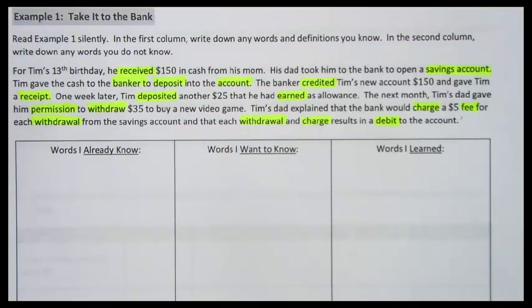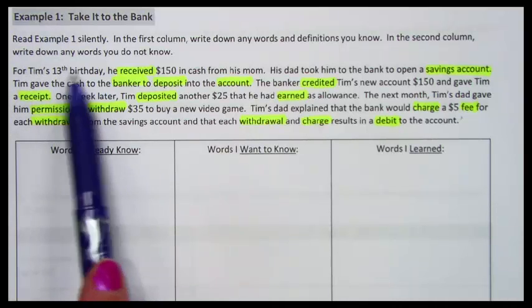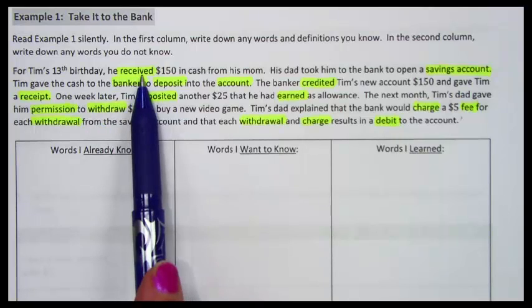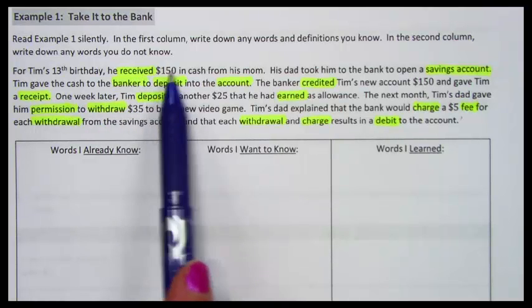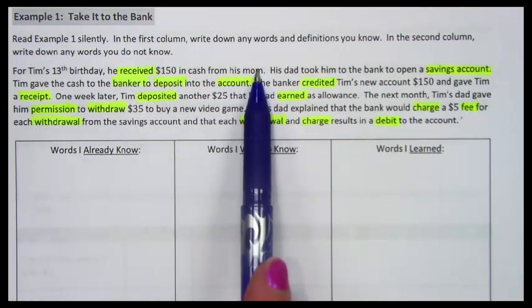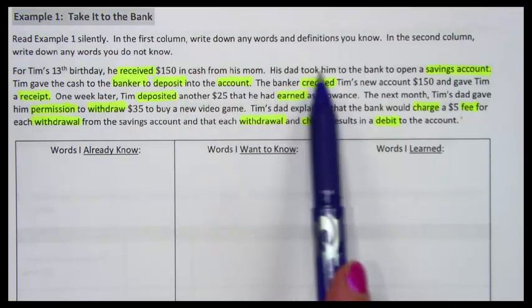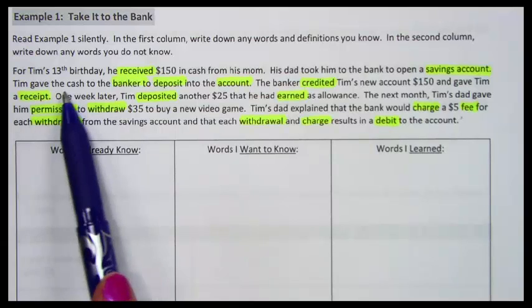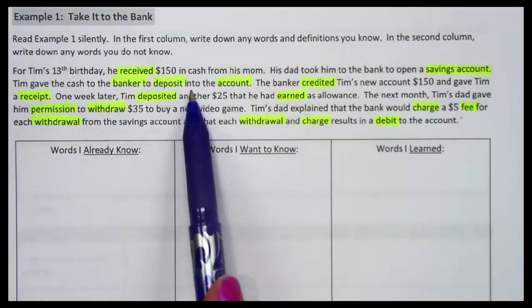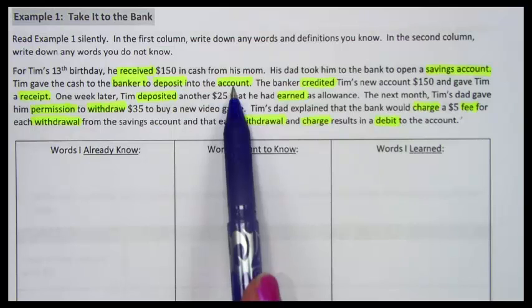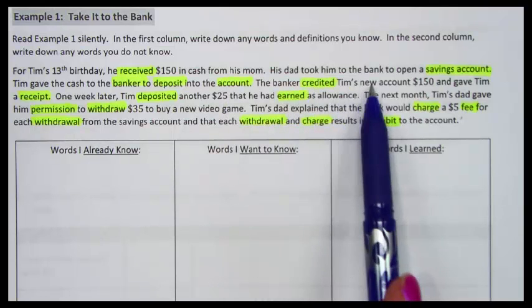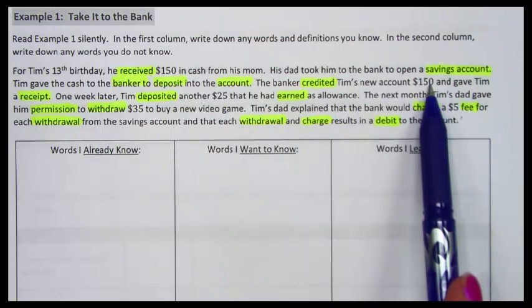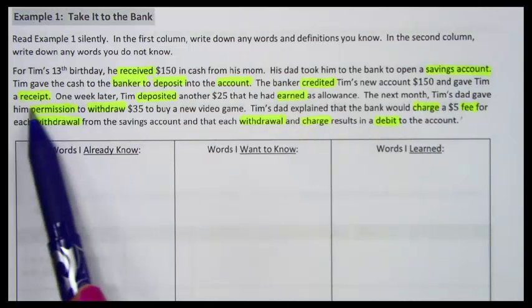Here's the paragraph. For Tim's 13th birthday, he received $150 in cash from his mom. His dad took him to the bank to open a savings account. Tim gave the cash to the banker to deposit into the savings account. The banker credited Tim's new account $150 and gave Tim a receipt.